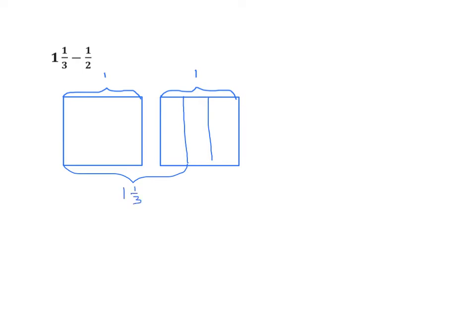Now we'll look at the subtrahend, and we see that's minus 1 half. We're going to subtract that from the whole, so I'm going to partition this into two halves. We're going to take away or cross out one of the two halves. Now let's write the expression: 1 minus 1 half equals 1 half. After taking out that 1 half, we have 1 half and we have 1 third. So let's write the expression 1 half plus 1 third to represent what remains of our area model.